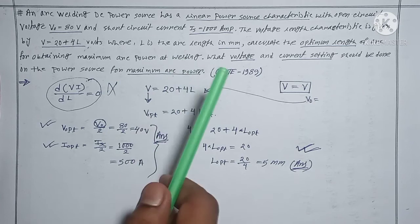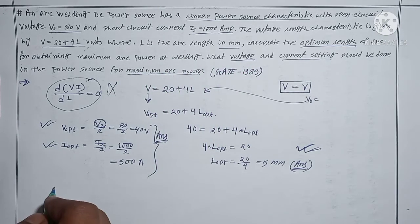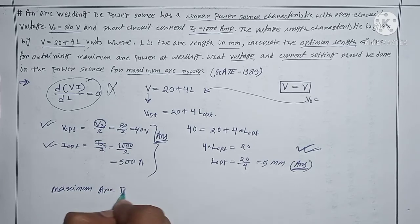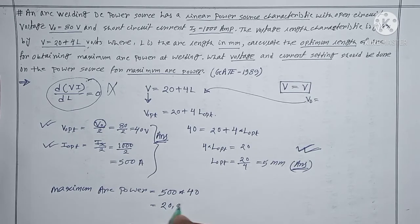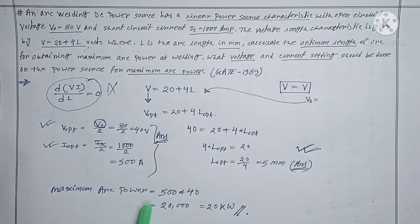If the question also asks you to find the maximum arc power, you can calculate it as: maximum arc power = I_opt × V_opt = 500 × 40 = 20,000 W = 20 kW. This particular question does not ask for it, but if asked, that is the calculation.